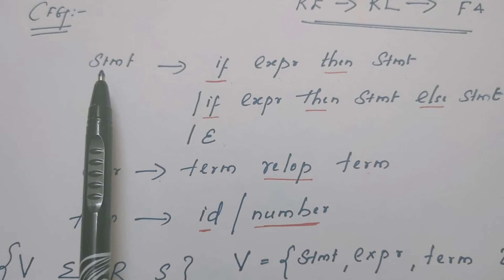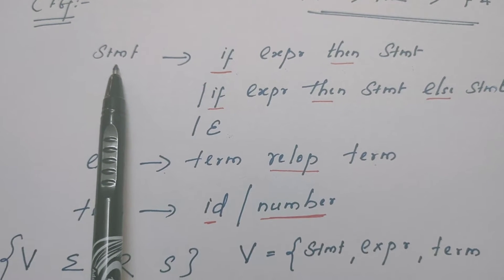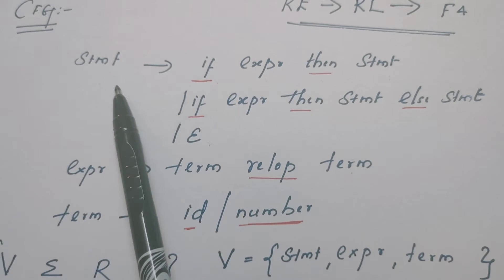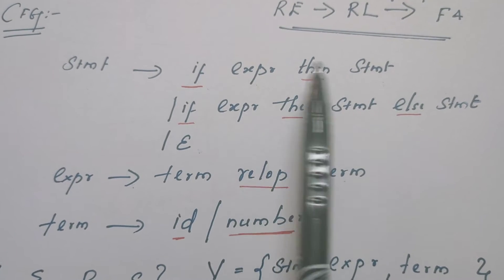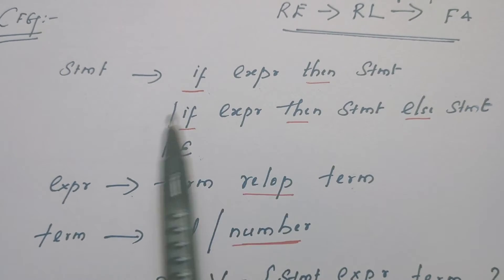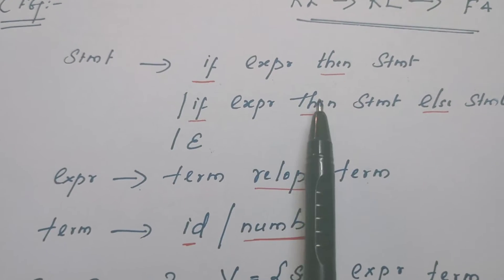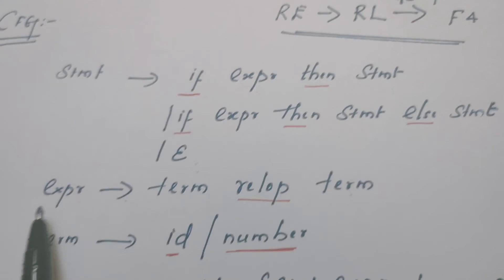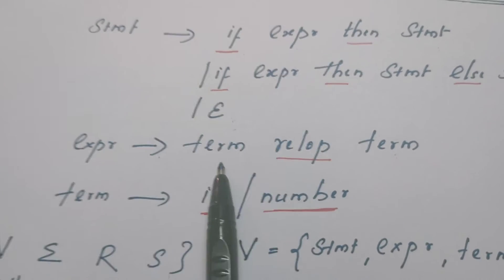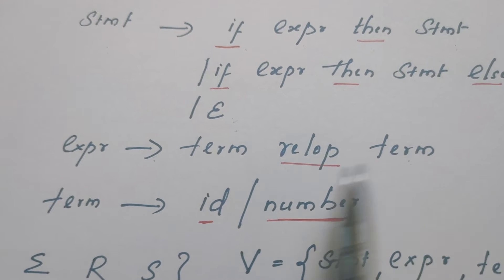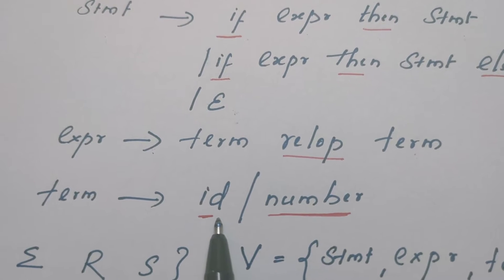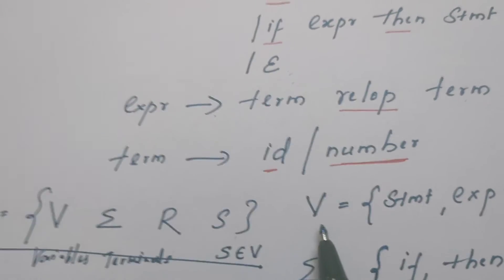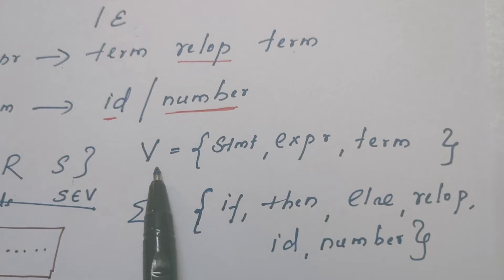Let us see the grammar. Statement is defined by three definitions: statement can be replaced by 'if expression then statement', or 'if expression then statement else statement', or statement can simply be replaced by epsilon. Expression is defined as 'term relational-operator term'. Term can be defined as either id — where id refers to identifier — or number.